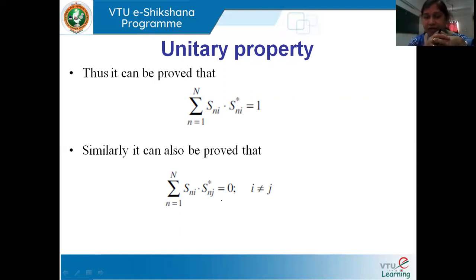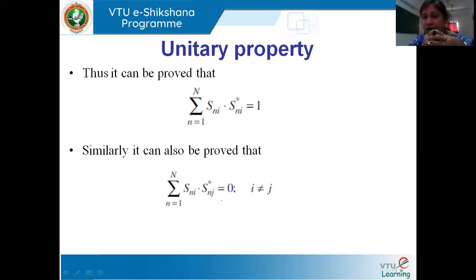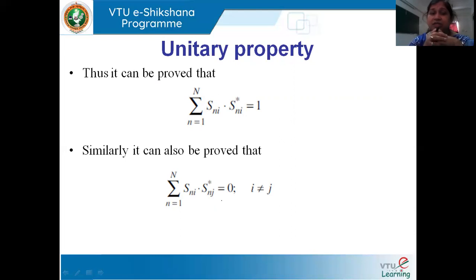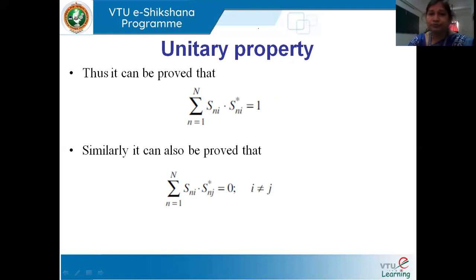This covers all five properties of the S matrix for an n-port network, which is an important exam question: represent the S matrix and state the properties. State all five properties, and depending on the marks, provide the proofs as well. In the next class, we will find the relationship between S parameters, Z parameters, and Y parameters, discuss the advantages of S parameters over Z and Y parameters for microwave networks, and solve certain problems. Thank you all — see you in the next class.